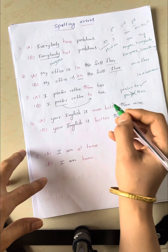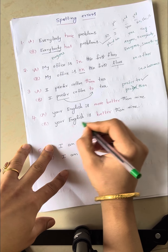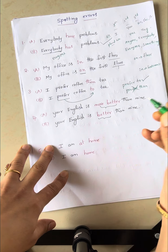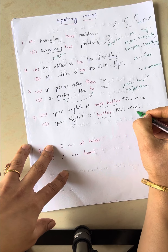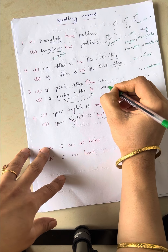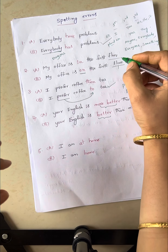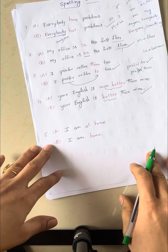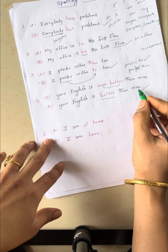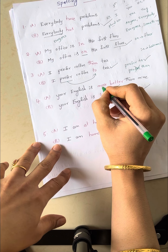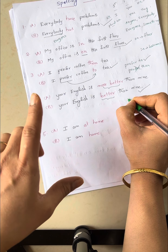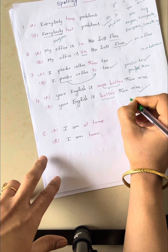Your English is more better than mine. Your English is better than mine. Just observe these two words: more and better. Which one is correct? This one — better than mine — is correct. Everybody knows positive, comparative, and superlative degrees.